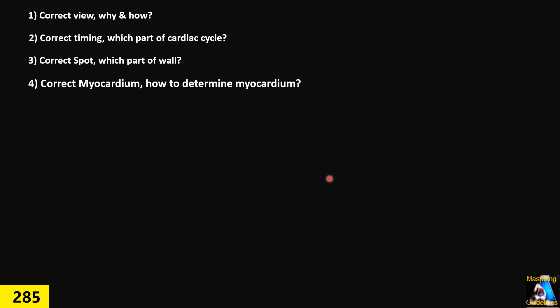Because we have epicardial fat pad, all those chordae tendineae and trabeculations. Where and how can you determine which spot and which area is the myocardium? Let's go one by one.